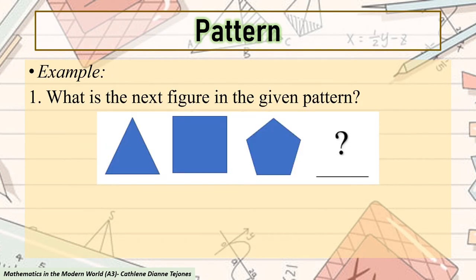So now, let us have our example. What is the next figure in the given pattern? As you can see, there is no shape that is being repeated. There is only one triangle, there is only one square, and also there is only one pentagon. By looking at the first shape, you can see that it is a triangle and it has three sides.